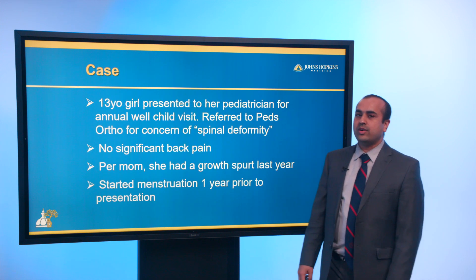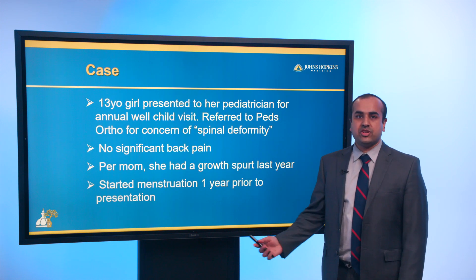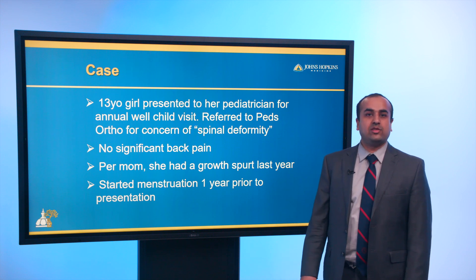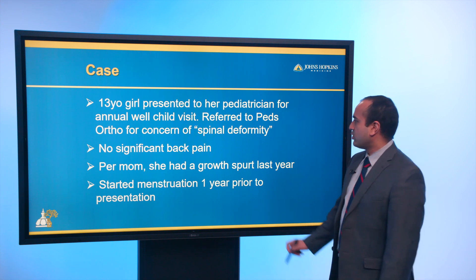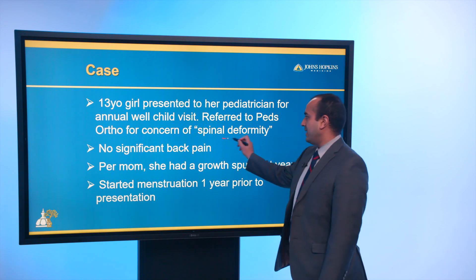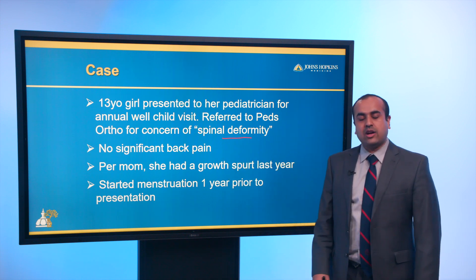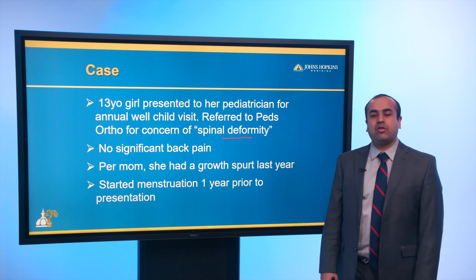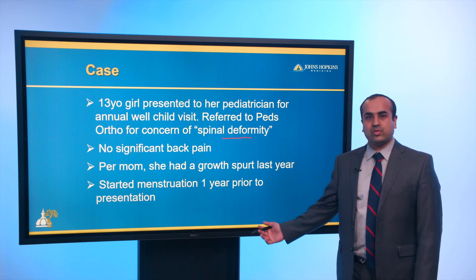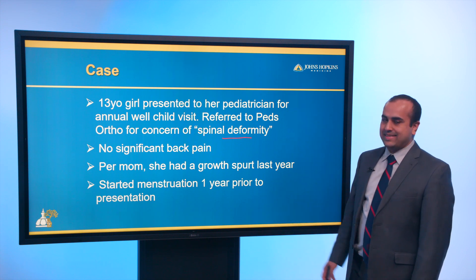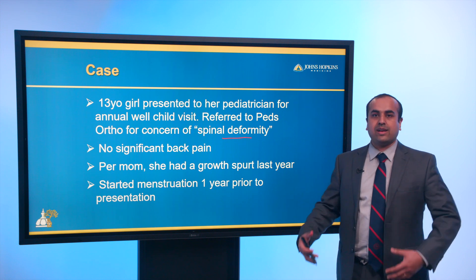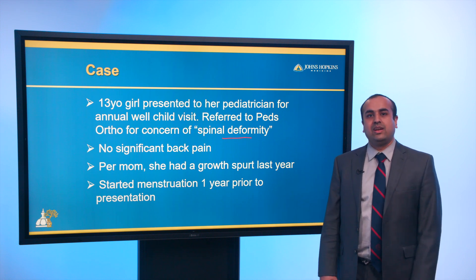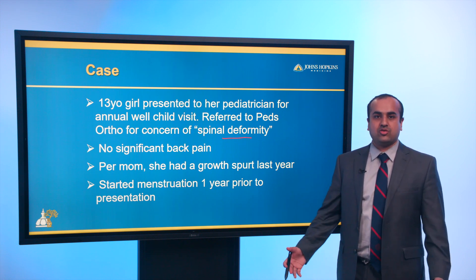The case is a 13-year-old girl who presented to her pediatrician's office for an annual well-child visit. She was referred to pediatric orthopedics for concern of spinal deformity. When I saw her, there was no significant back pain. Her mom reported she had a growth spurt last year, and she started menstruation about one year prior to presentation. That's important to know and report in the history, as it helps you understand how much growth is remaining.